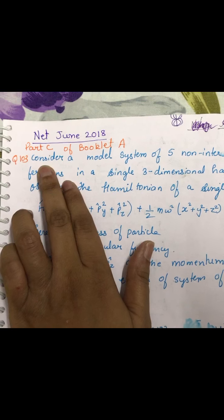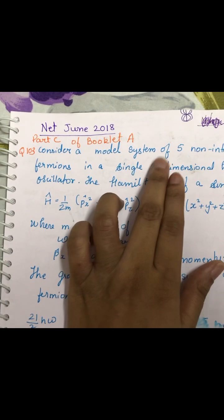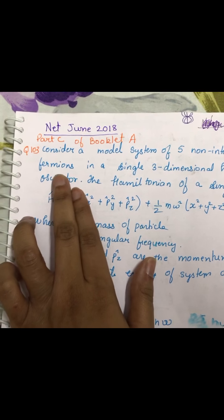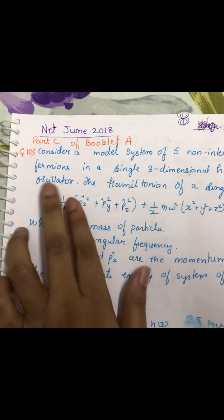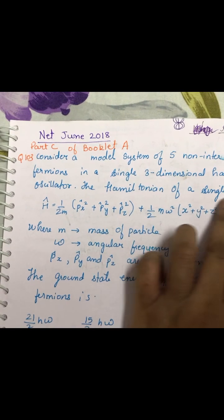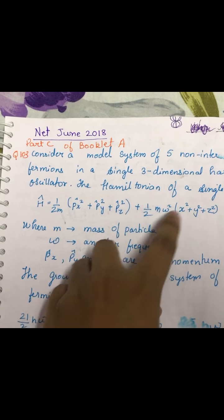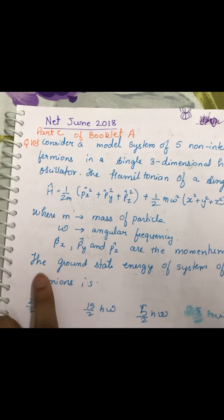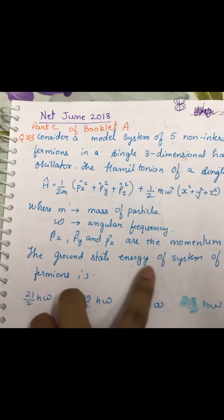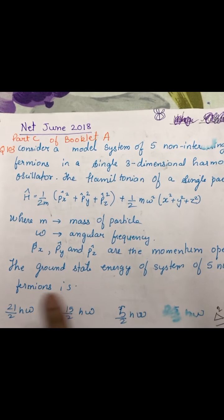Now the question says, consider a model system of five non-interacting fermions in a single three-dimensional harmonic oscillator. The Hamiltonian of a single particle is so and so, where the notation of all this is given in this question. So we need to find out the ground state energy of system of five non-interacting fermions.